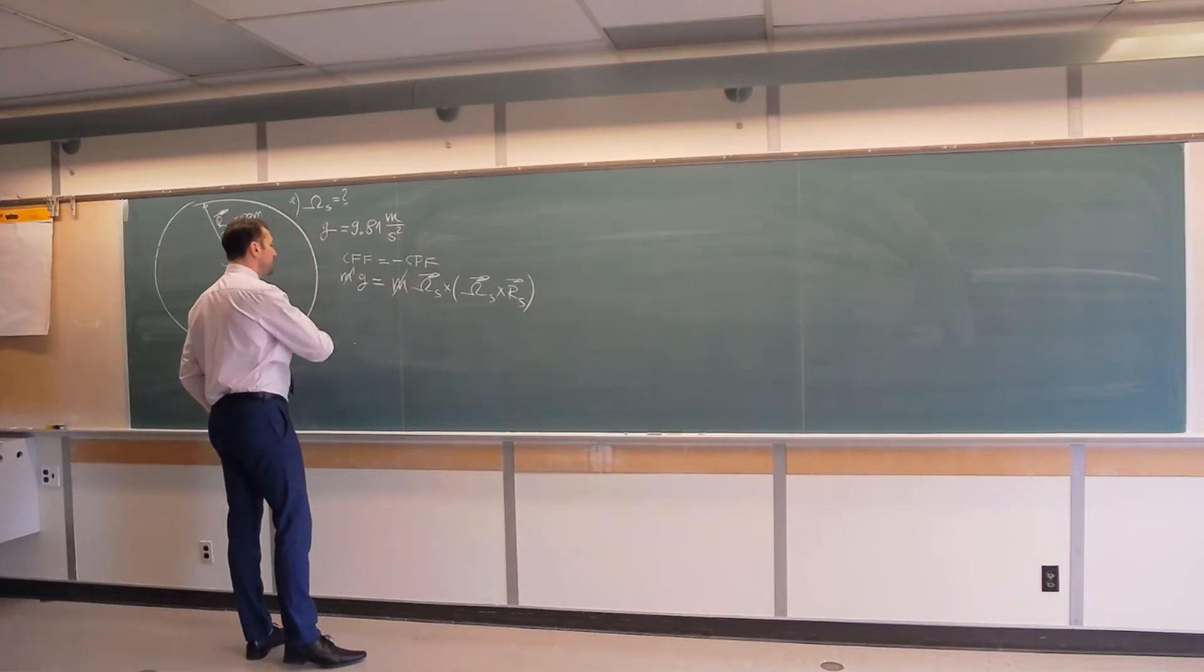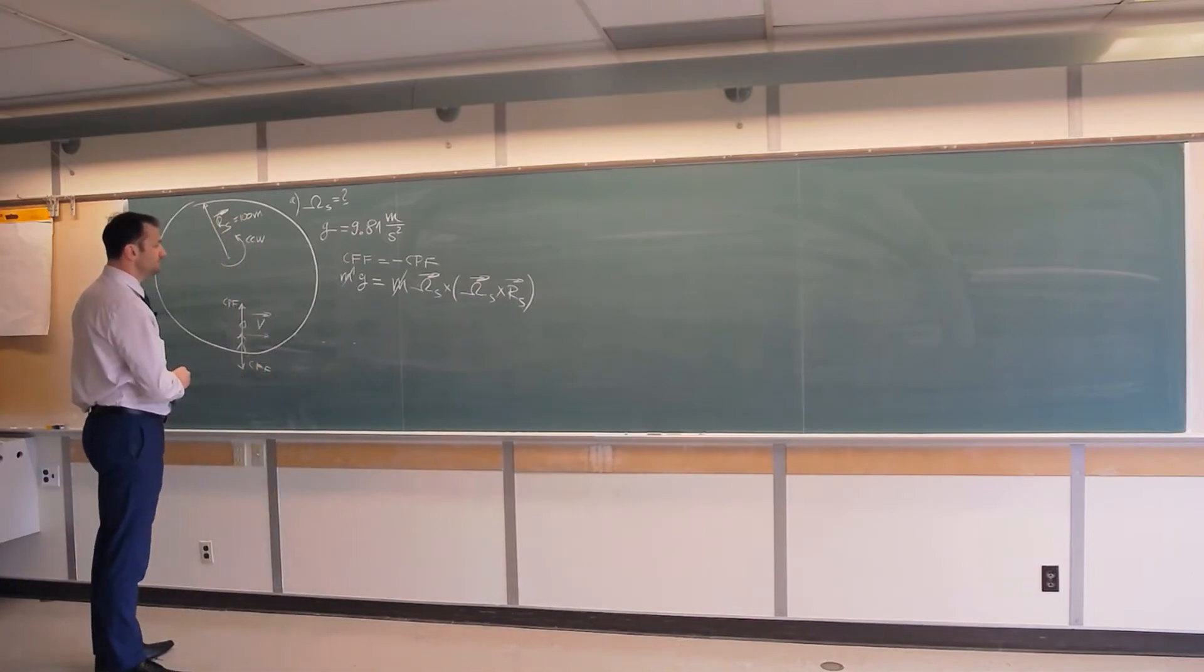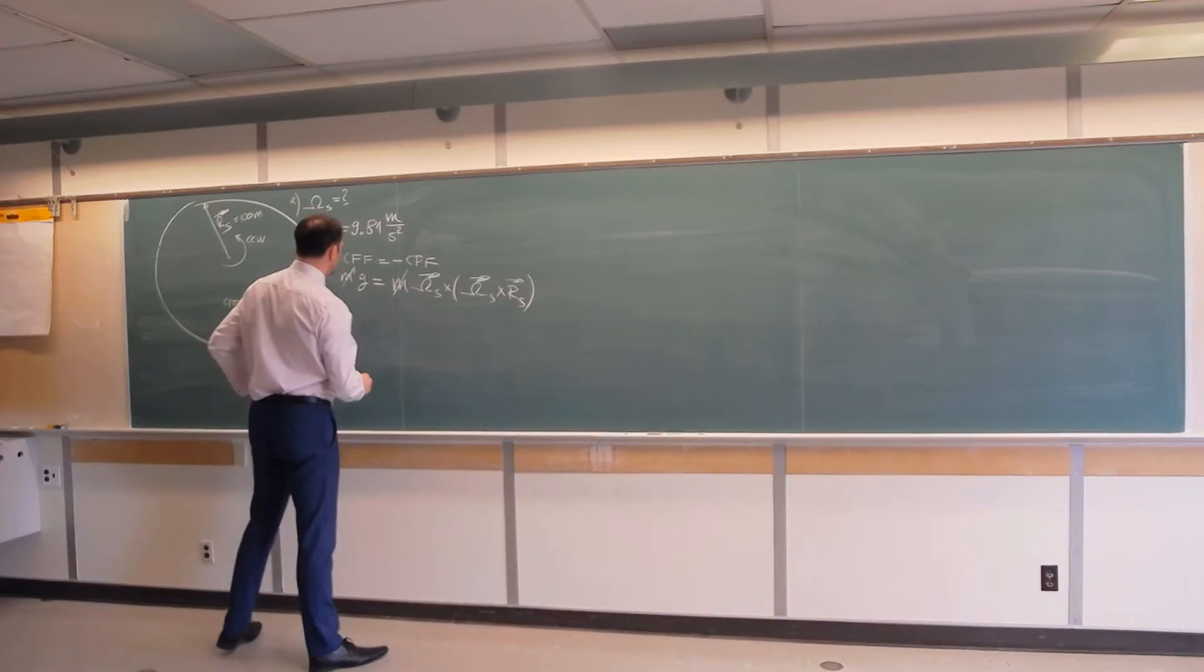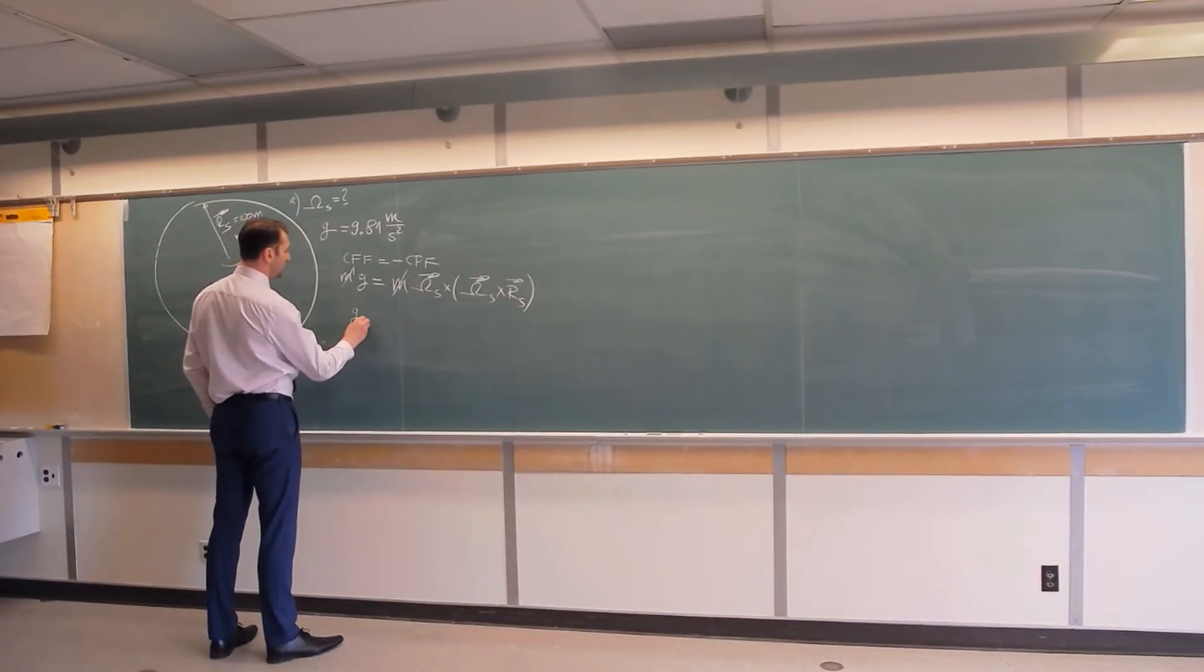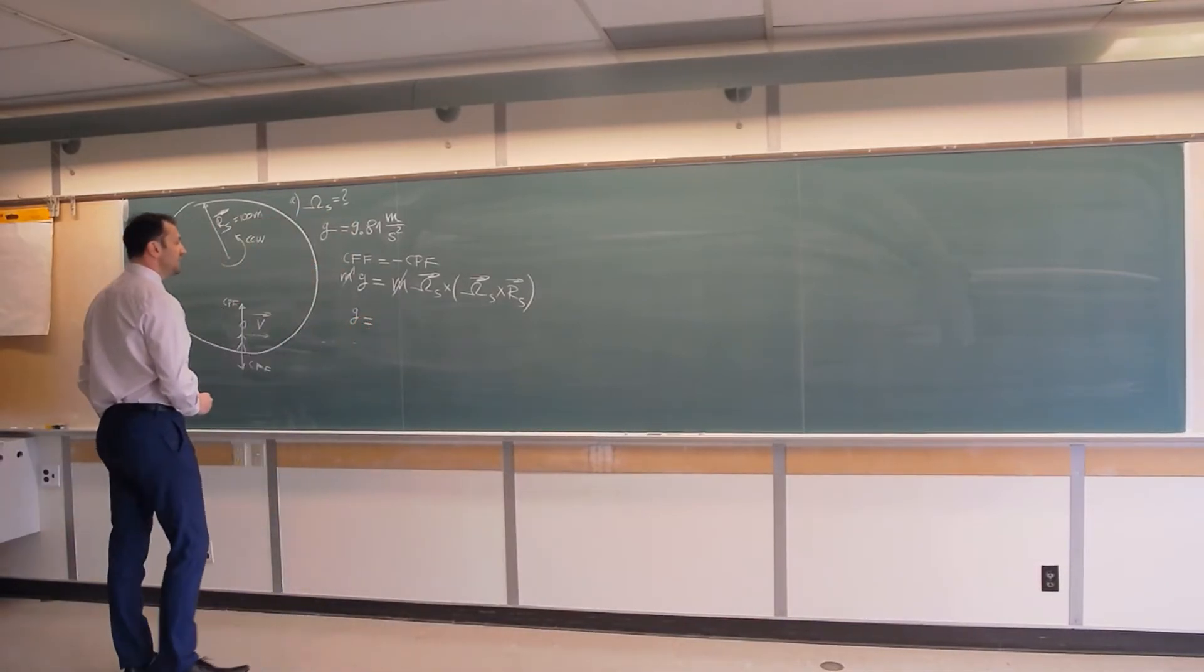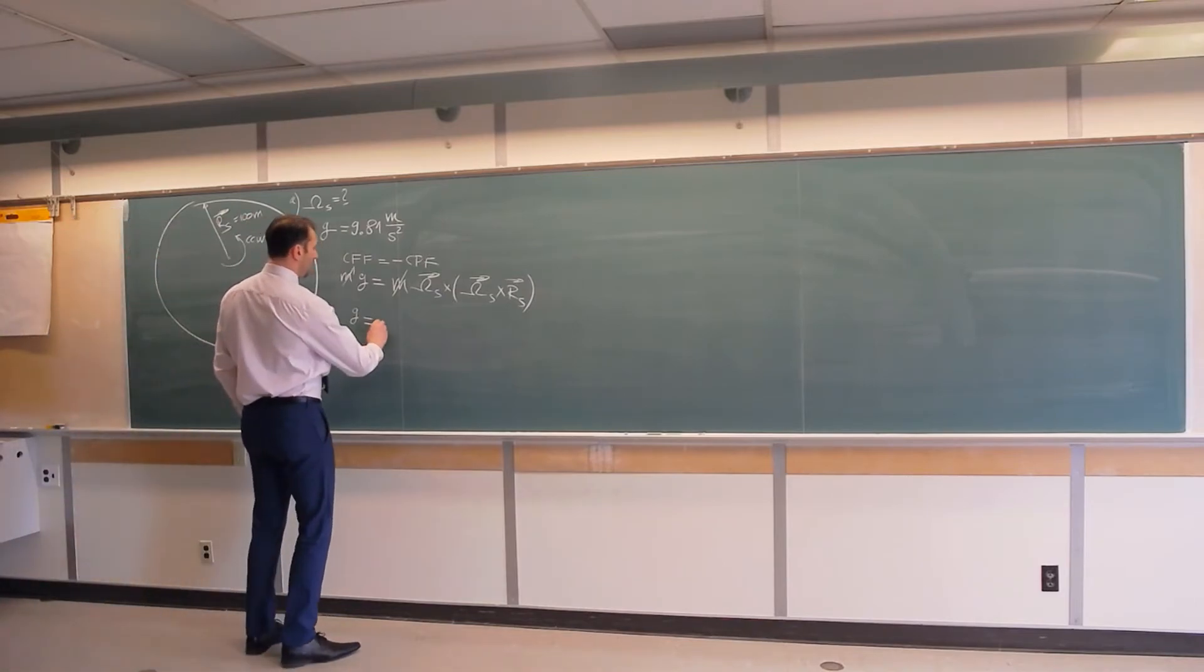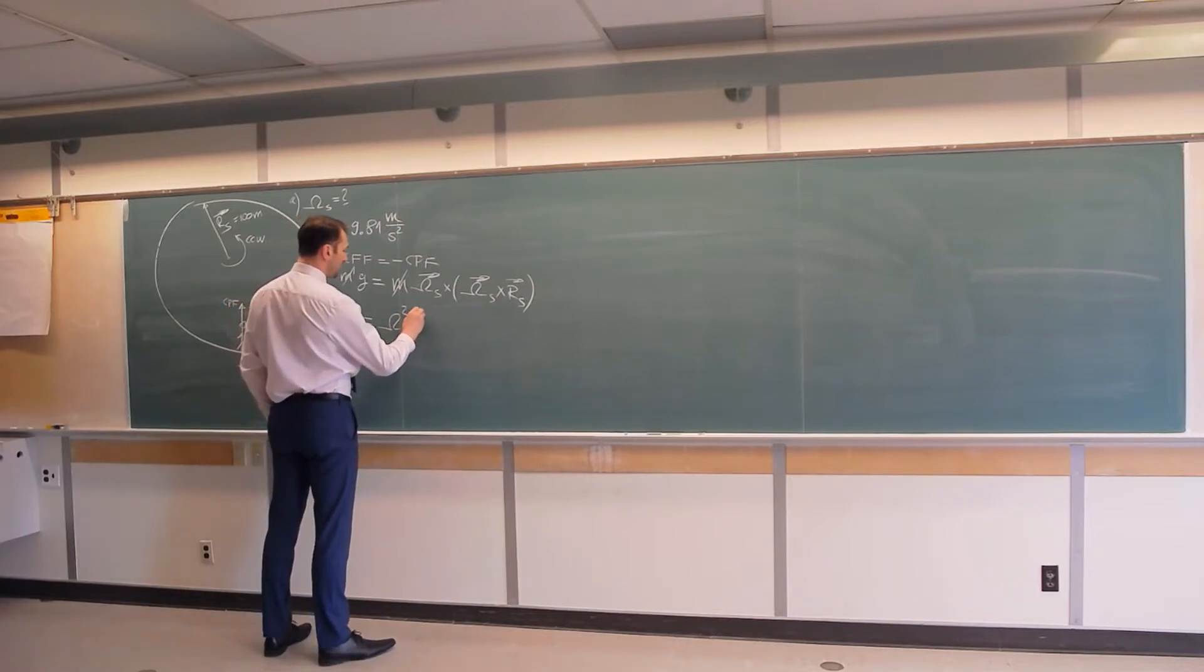Now you can see that mass and mass cancels, and notice that here we will have that g is equal omega of the space station squared times radius of the space station.